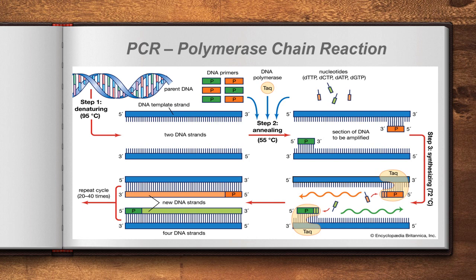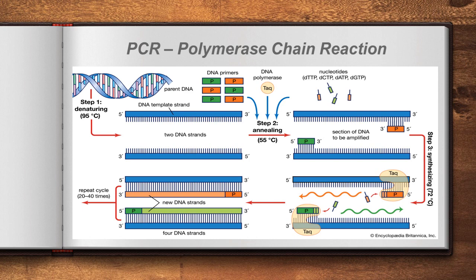PCR — polymerase chain reaction — is a technology used to multiply DNA. The two strands of DNA separate, and each strand produces a matching complementary strand, resulting in two copies. This process repeats again and again, producing many copies of the same DNA. This technology is applied to learn about a particular species in taxonomical study.